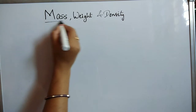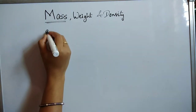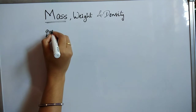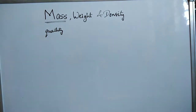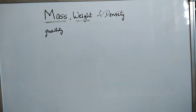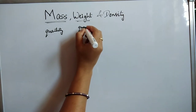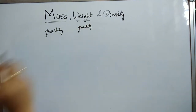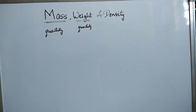We have already heard about mass. Mass is the quantity of any object. Similarly, we have heard about weight. Weight is also a quantity of any object. Then what is the difference between mass and weight?